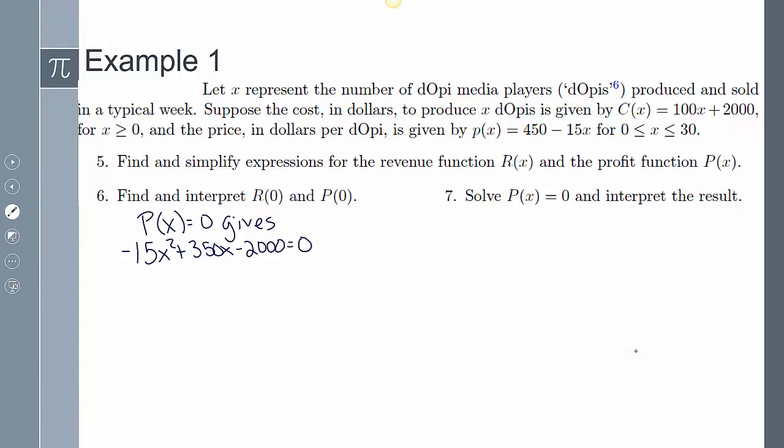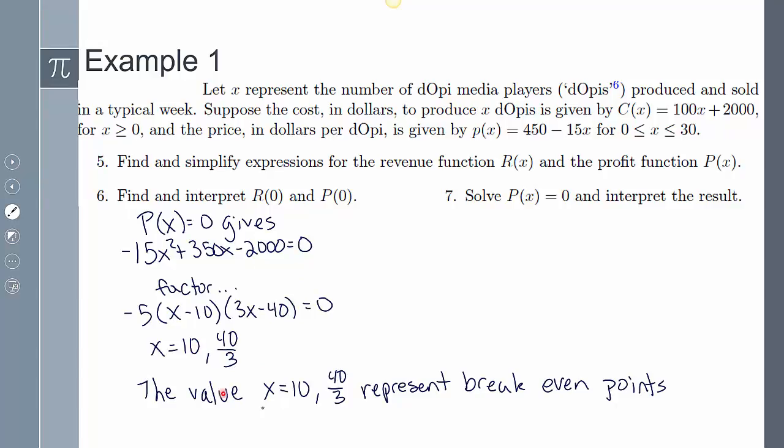The last one, solve P(x) equals zero and interpret the result. So when will my profit be zero or when will I break even? So if I set that equal to zero, if I factor it completely, I'm going to get x equals 10 and 40 thirds. And so that represents my break even points. But we kind of have to examine this 40 thirds further because can I include that as my answer? Can I sell 40 thirds DOPs? And the answer is going to be no. You can't sell that third of a DOP because that's going to be 13.33. You can't sell 0.33 DOPs. And so in this case, you can't even include that as part of your domain.